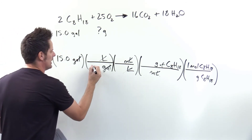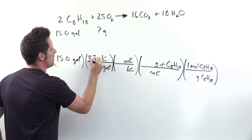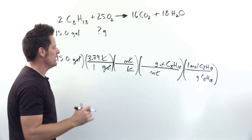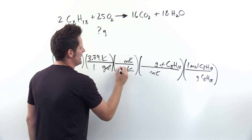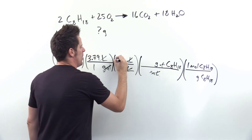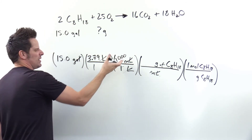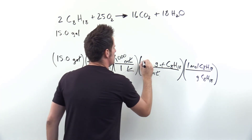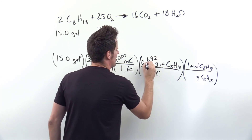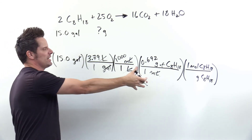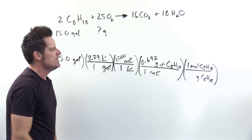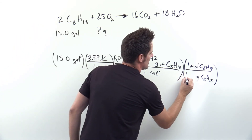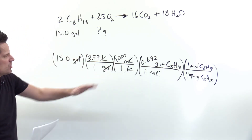One liter contains 1,000 milliliters — students are required to memorize this. The density of octane given in the question is 0.692 grams per milliliter, meaning one milliliter of octane contains 0.692 grams of octane. The molecular weight of octane, as we found in Part B, is 114 g/mol. Multiplying all of that through, I end up with units of moles of octane and a value of approximately 345 moles of octane.